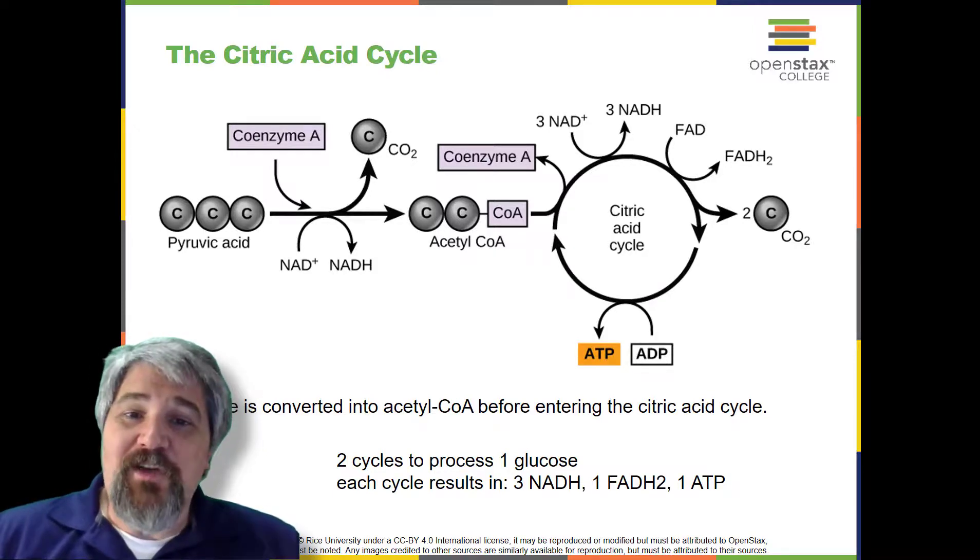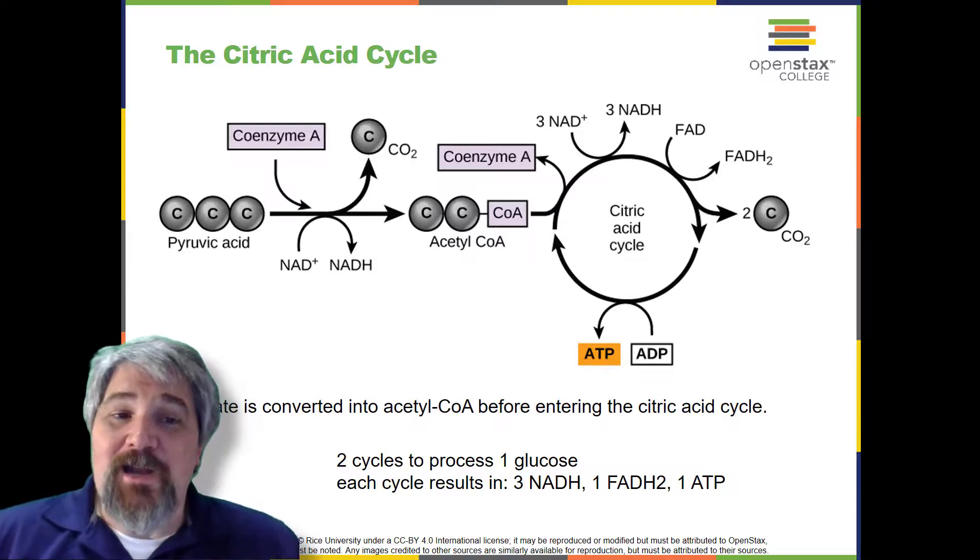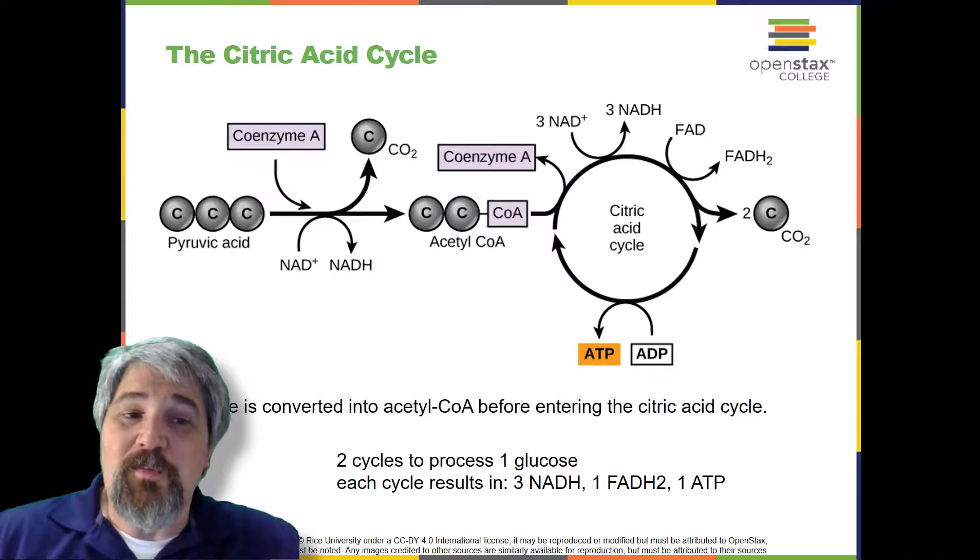Two carbon atoms come into the citric acid cycle from each acetyl group. Two carbon dioxide molecules are released on each turn of the cycle. However, these do not contain the same carbon atoms contributed by the acetyl group on that turn of the pathway. The two acetyl carbon atoms will eventually be released on later turns of the cycle. In this way, all six carbon atoms from the original glucose molecule will be eventually released as carbon dioxide.